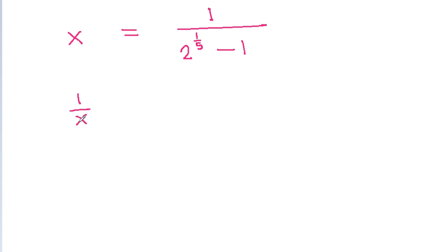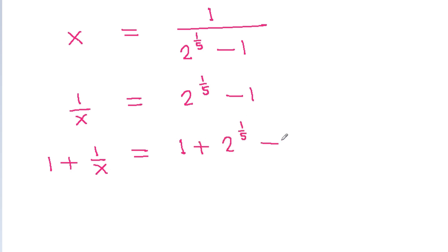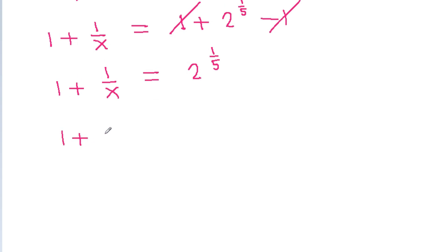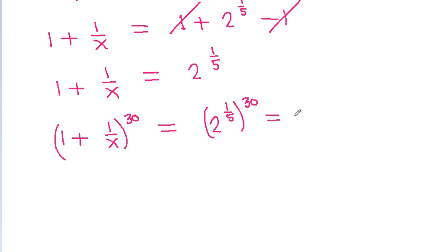So 1 plus 1 by x is equal to 1 plus (2 power 1 by 5 minus 1), and the 1s cancel. So 1 plus 1 by x equals 2 power 1 by 5. Therefore (1 plus 1 by x) power 30 equals 2 power (1 by 5 times 30), which is 2 power 6, that is equal to 64.